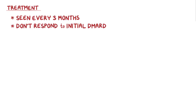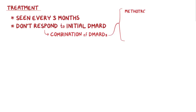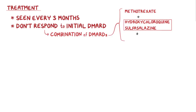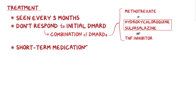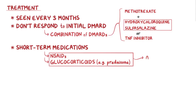Individuals with rheumatoid arthritis should be seen at least every three months to monitor the response to therapy. Those who don't respond to initial DMARD therapy should get a combination of DMARDs, such as methotrexate plus either hydroxychloroquine and sulfasalazine, or a TNF inhibitor. In addition to long-term medications, short-term medications like NSAIDs, or even glucocorticoids like prednisone, can be used to treat an acute flare.